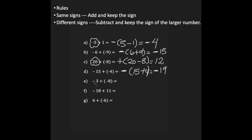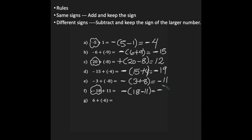For E, I have negative 3 plus negative 8. The signs are the same, so I'm going to keep my sign and add my integers: 3 and 8. My answer is negative 11. For F, my signs are different — I have a negative and I'm adding a positive — so I'm going to subtract: 18 minus 11. My bigger number is the 18, so I'm going to keep the negative sign. My answer is negative 7.